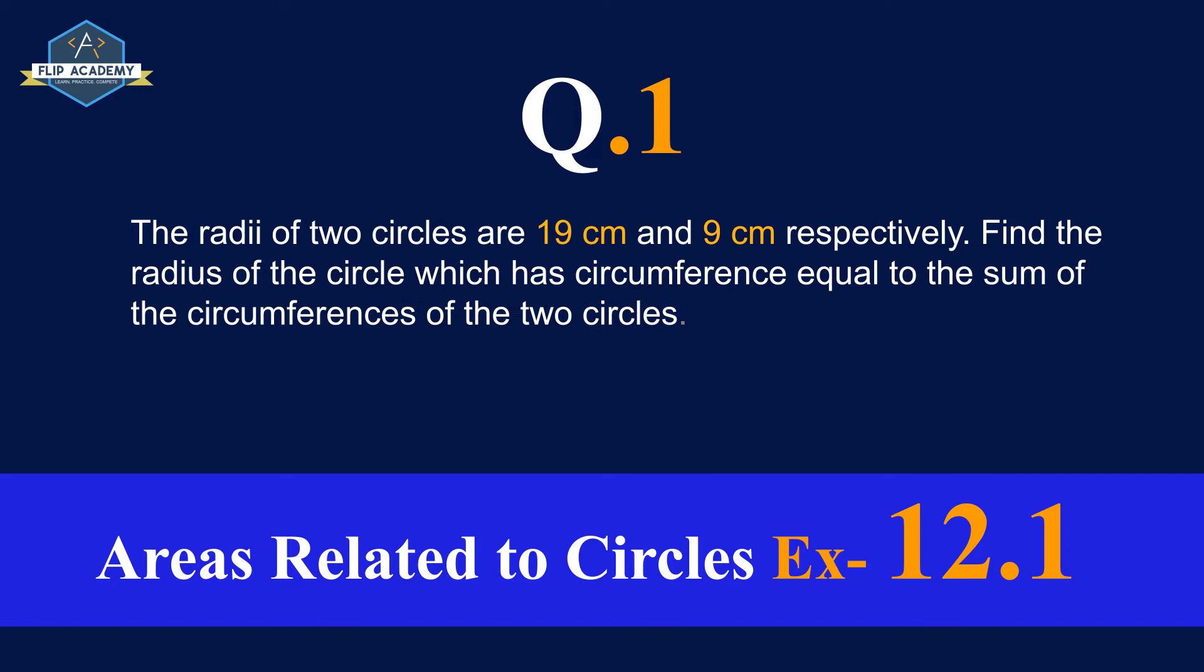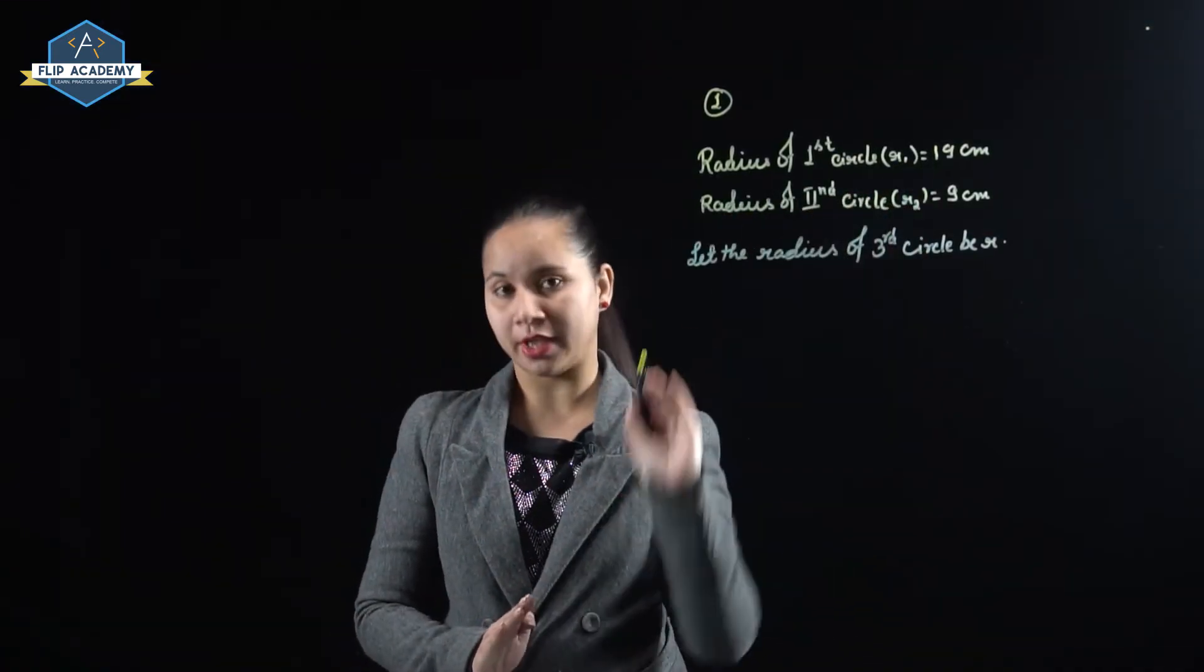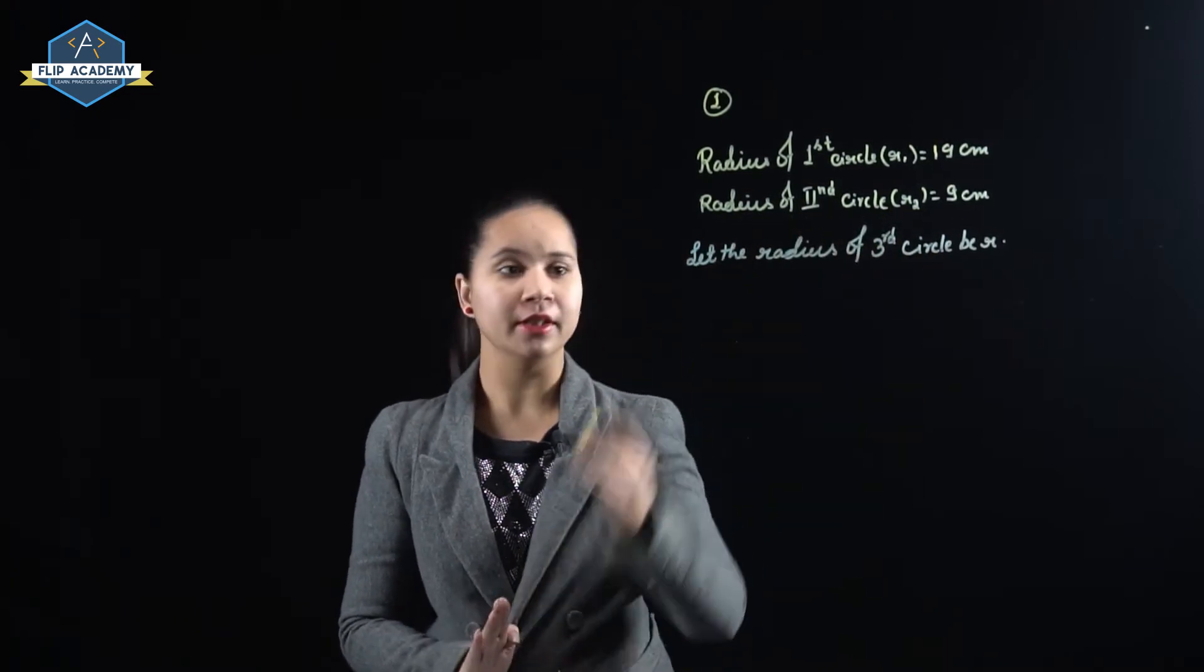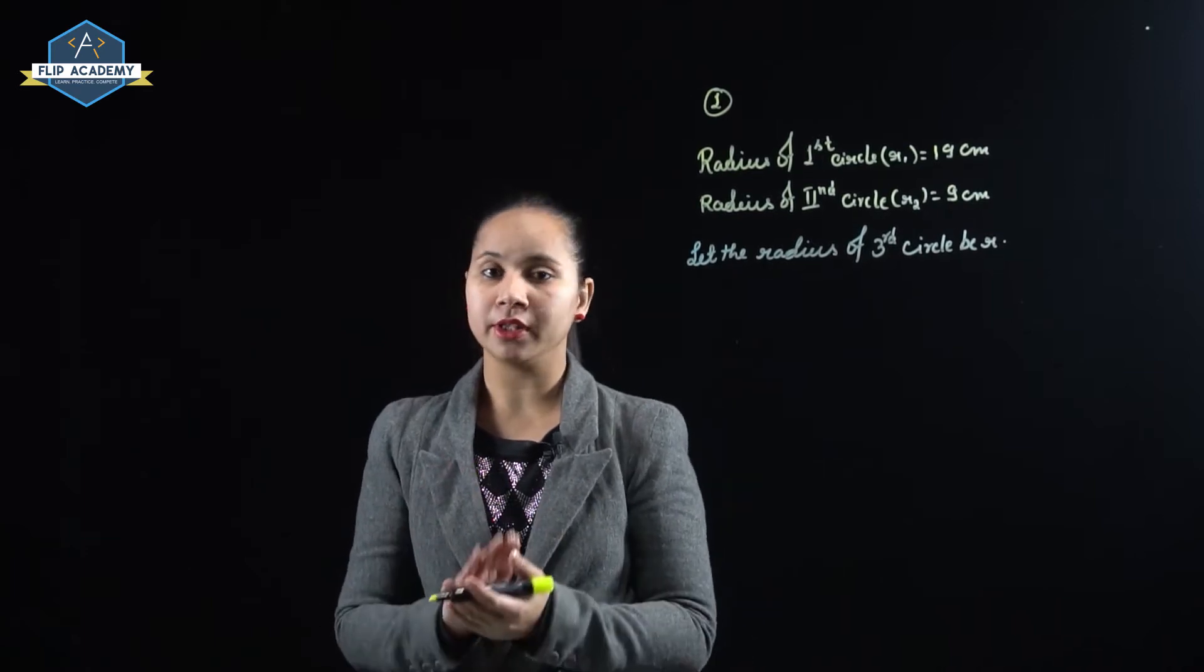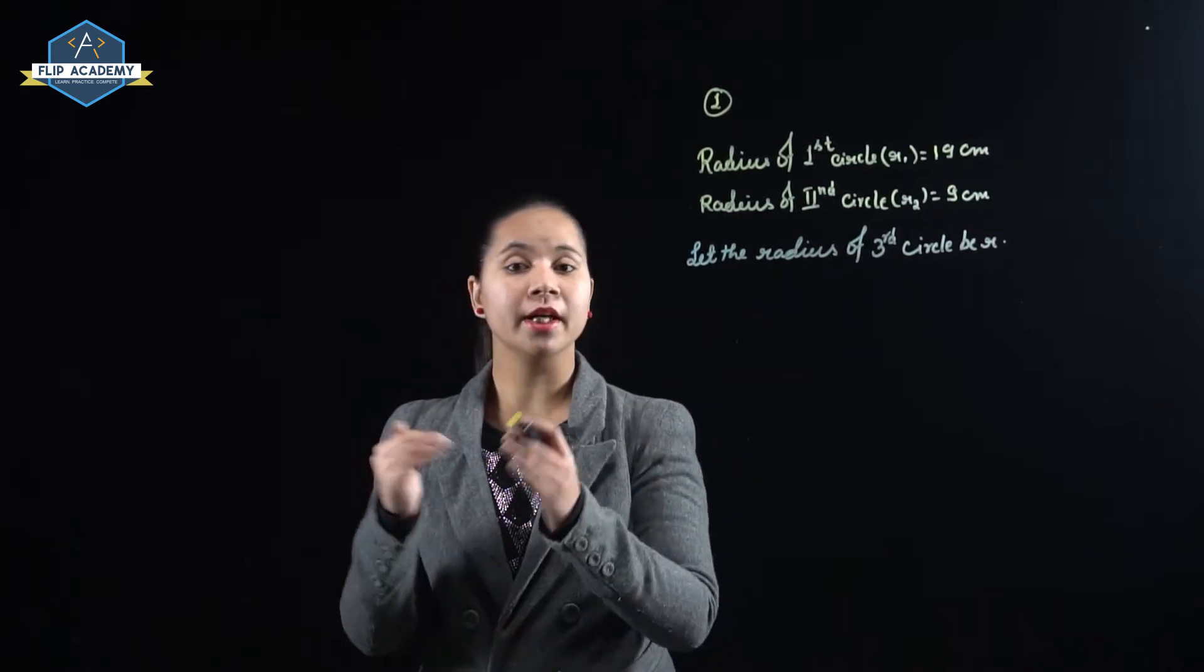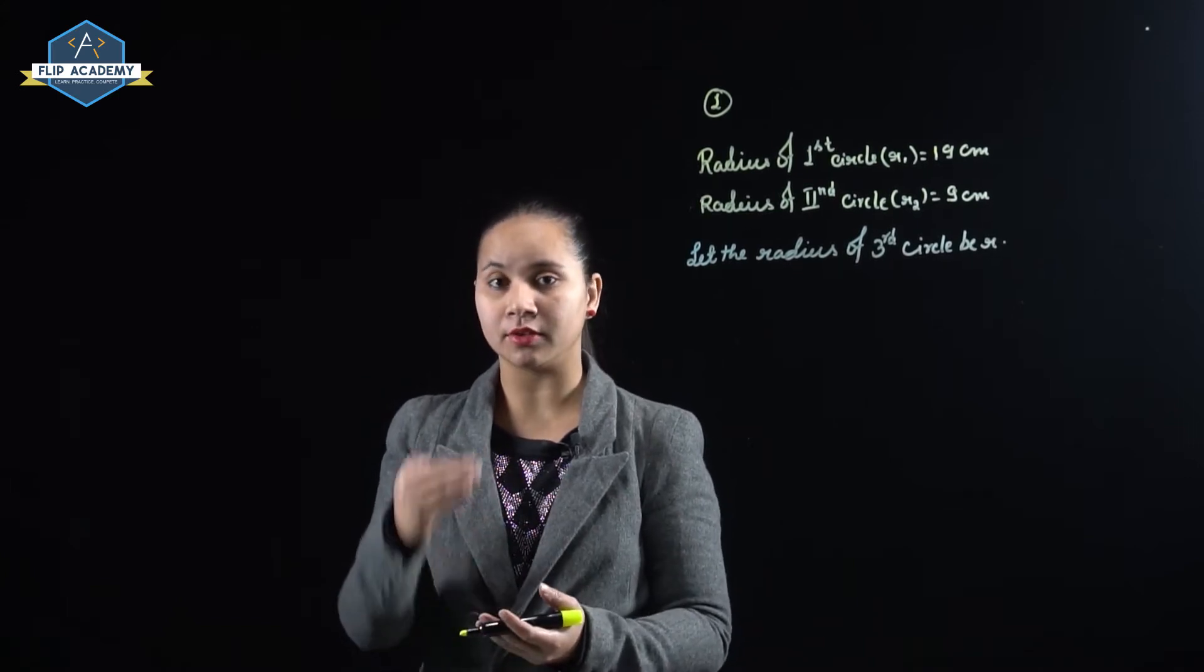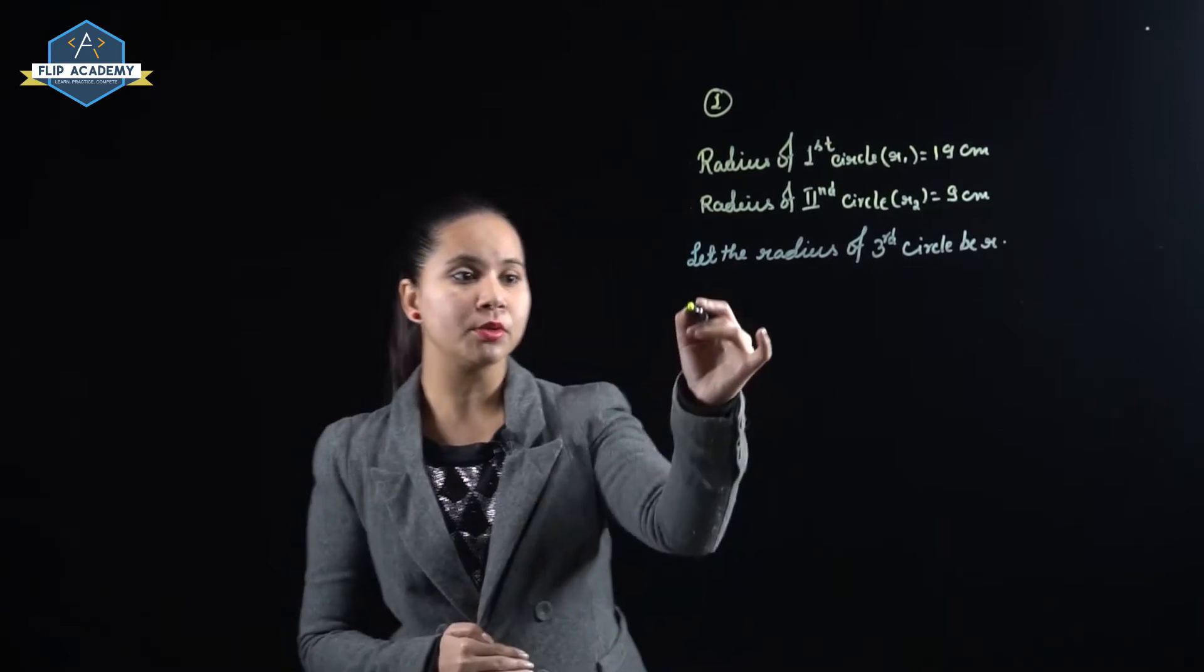So we have given radius of first circle r1 is equal to 19 centimeter and radius of second circle r2 is equal to 9 centimeter. Let the radius of third circle be r. We need to find the radius of the third circle. The given condition is sum of circumference of the first two circles is equal to the circumference of the third circle.